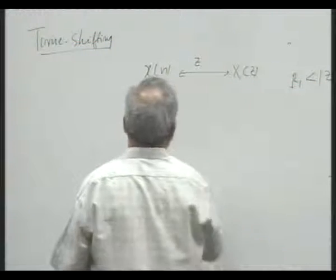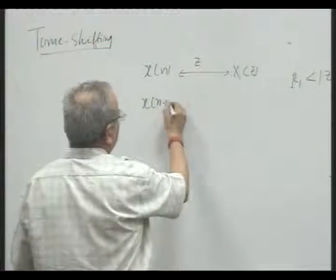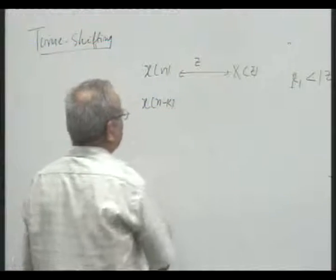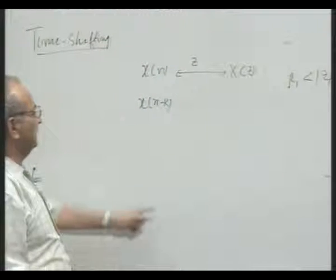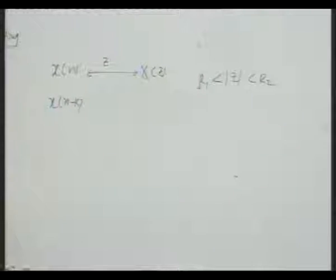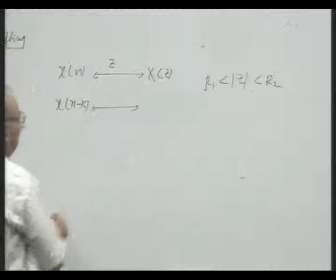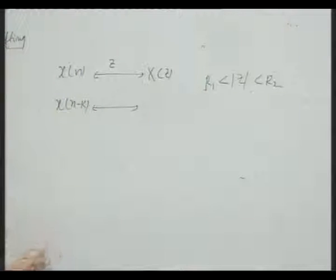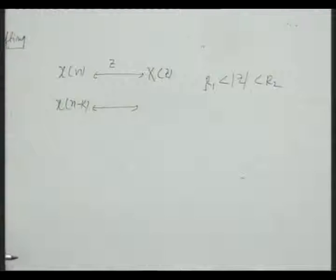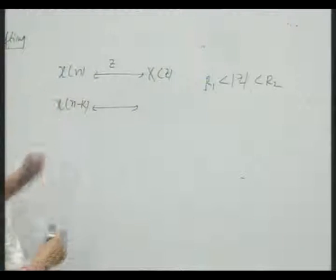What could be the z-transform of the signal which is delayed by k? Let us try to find out — this will be really very useful. Let us try to find out the z-transform from this definition.